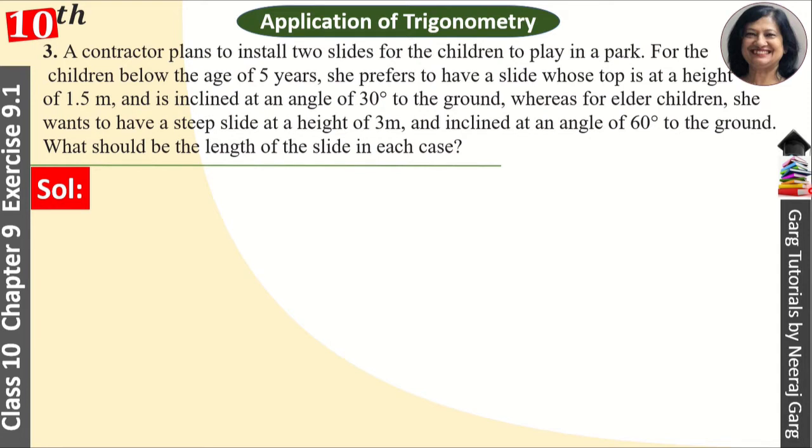A contractor plans to install two slides for the children to play in a park. For the children below the age of 5 years, she prefers to have a slide whose top is at a height of 1.5 meter and is inclined at an angle of 30 degrees to the ground. Whereas for elder children, she wants to have a steep slide at a height of 3 meter and inclined at an angle of 60 degrees to the ground. What should be the length of slide in each case?